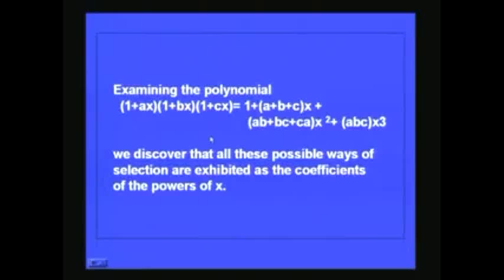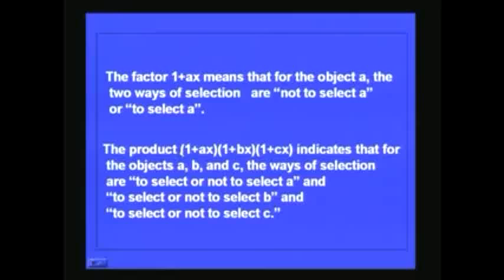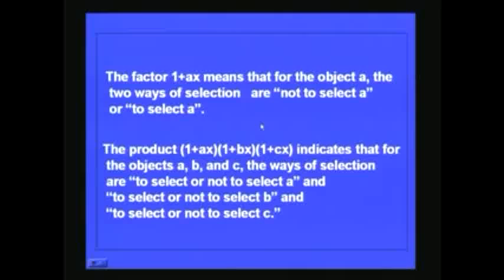If you look at the left-hand side of that equation, this is the product where for objects A, B and C the ways of selection are: select or not select A (represented by the first factor), select or not select B (represented by the second factor), and select or not select C (represented by the third factor). Together this gives you the number of ways of selecting one, two, or three objects out of A, B, C, and the coefficient of x^r on the right-hand side gives you the possible ways of selecting r objects out of these three objects.